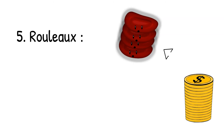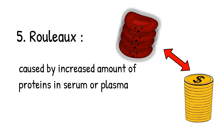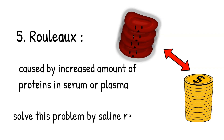Fifth, rouleaux. This is the same reason as for red blood cell discrepancy. A good indication that we are dealing with rouleaux is when we have a stronger immediate spin and a weaker reaction at 37 degrees, with no agglutination at the antiglobulin phase. Rouleaux is caused by an increased amount of protein in the serum. We can solve this problem by performing saline replacement, which will remove the excess proteins and allow the reagent cells to react with patient serum without protein interference.